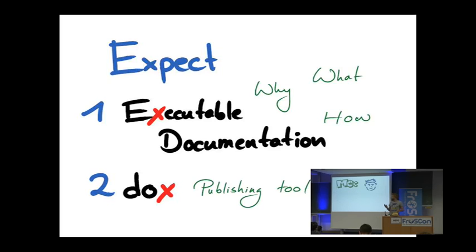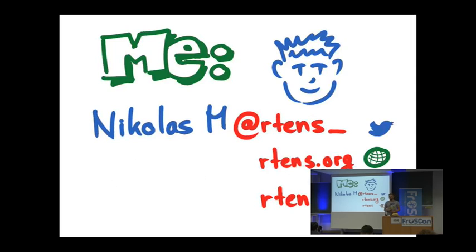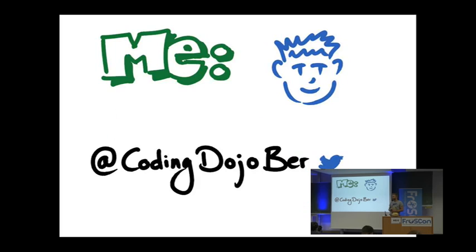First, a little bit about me. My name is Nicholas Martens. I'm a freelancing software engineer and coach in Berlin. Anybody from Berlin here? You can find me on Twitter, on the web, or on GitHub. I'm also co-organizing a coding dojo in Berlin — it's next Thursday, coming up. Everybody who's ever in Berlin, just drop by. It's really fun.